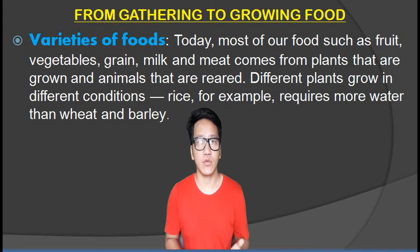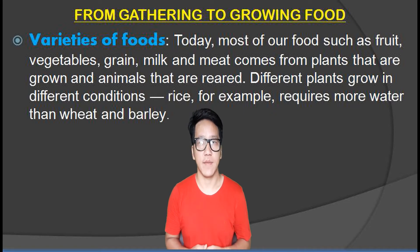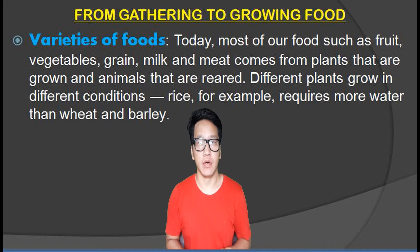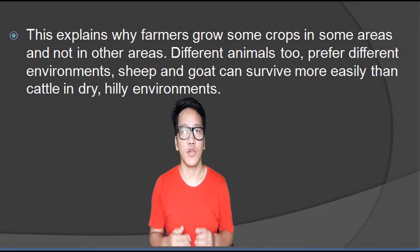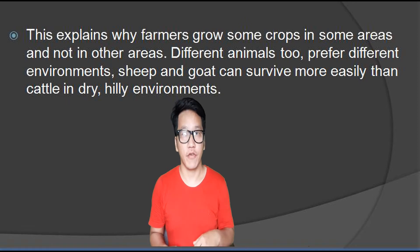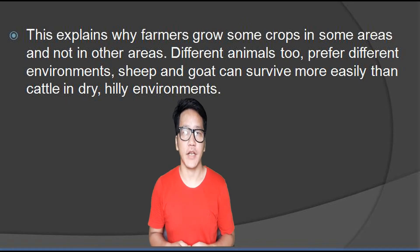Different plants grow in different conditions. Rice, for example, requires more water than wheat and barley. This explains why farmers grow some crops in some areas and not in others. Different animals too prefer different conditions and environments. Sheep and goat can survive more easily than cattle in dry, hilly environments.